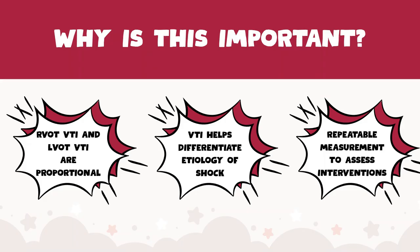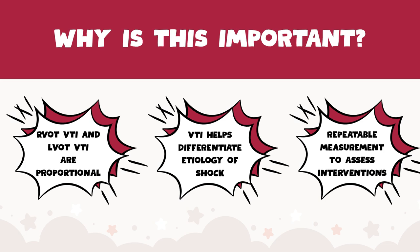So why is this topic important? The RVOT VTI and LVOT VTI are proportional, and the VTI really helps you differentiate the etiology of shock, especially when combined with a fluid assessment. It's also a repeatable measurement to assess your intervention — you can do it again after you give fluids or some kind of treatment to see if your interventions are working. Compared to other methods like CVP, VTI has kind of the best properties in terms of sensitivity and specificity.